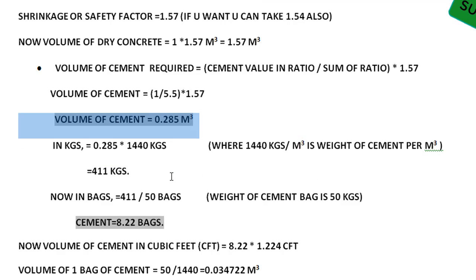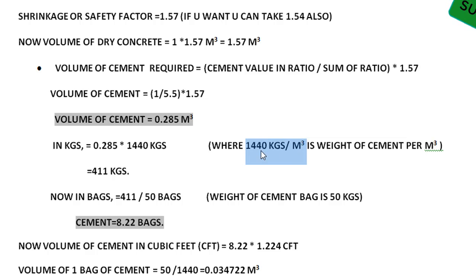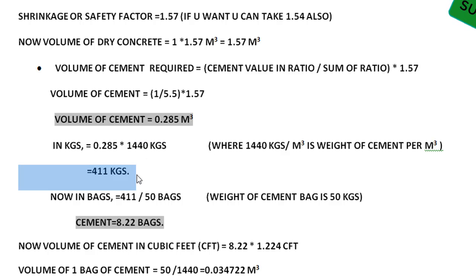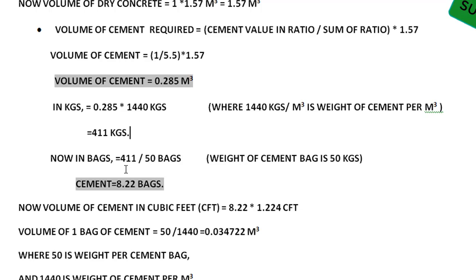To convert the volume of cement into kilograms: 0.285 cubic meters multiplied by 1440 kg per cubic meter gives 411 kgs. The weight of one cement bag is 50 kg, so the number of bags required is 411 divided by 50, which equals 8.22 bags.